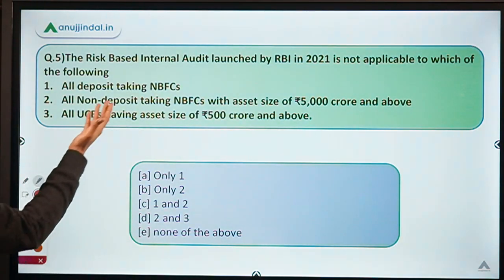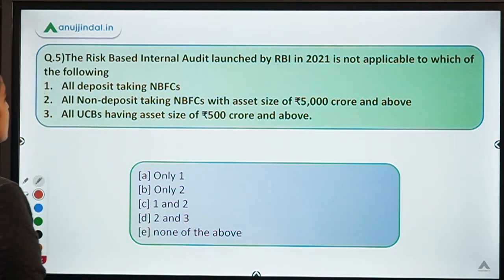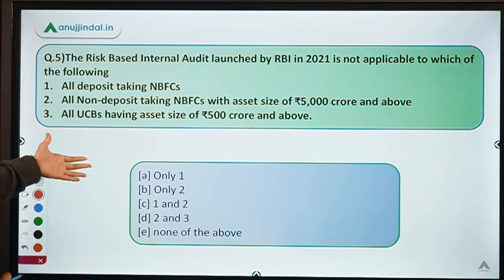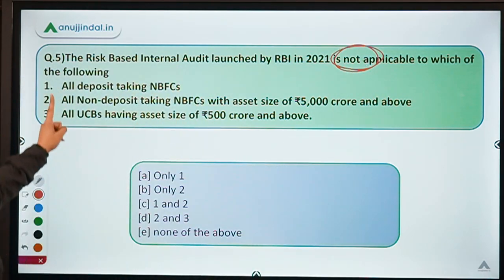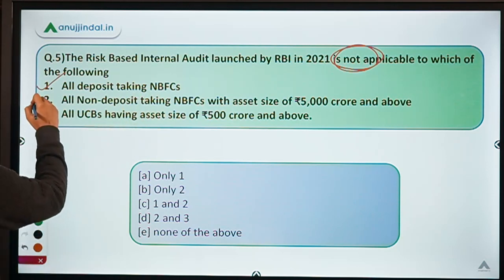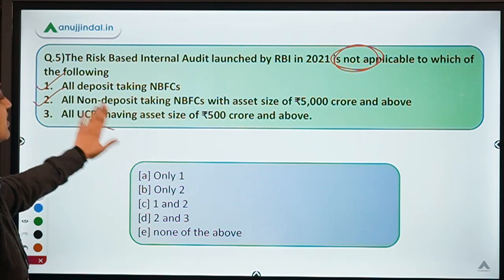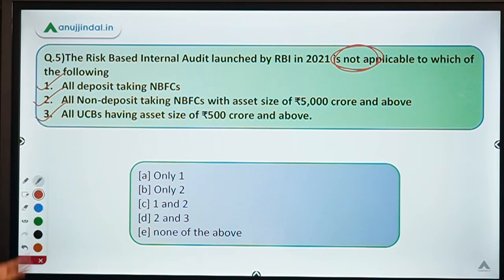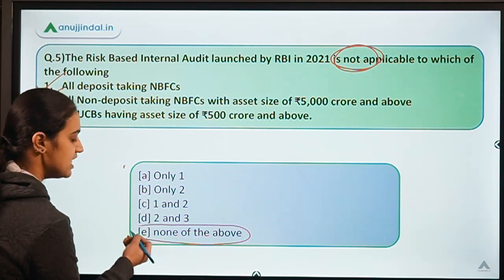Now let's move to the question — it's quite direct after understanding the concept. You have to identify which organization this framework is not applicable to. All deposit-taking NBFCs — yes, they must follow it. All non-deposit-taking NBFCs with asset size of 5,000 crore or more — yes. All UCBs, that is Urban Cooperative Banks, with asset size of 500 crore and above — yes, they also must follow it. So all three options are covered; the answer is option E — none of the above.